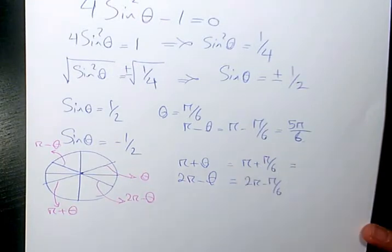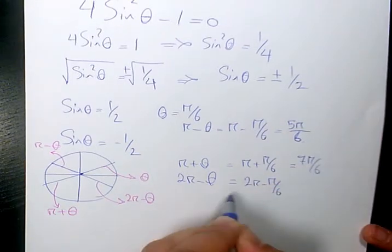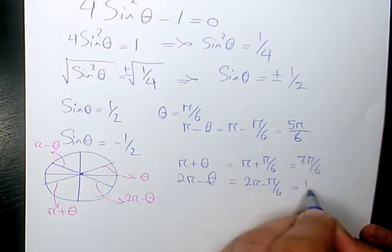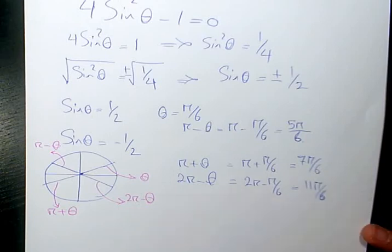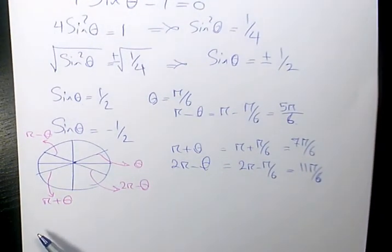So here, when you do common denominator, it's going to be 7 pi over 6, and here we will have 11 pi over 6, which this one is going to be equivalent to 210 degrees, and this one is going to be equivalent to 330 degrees.